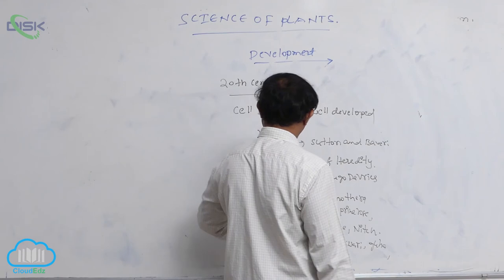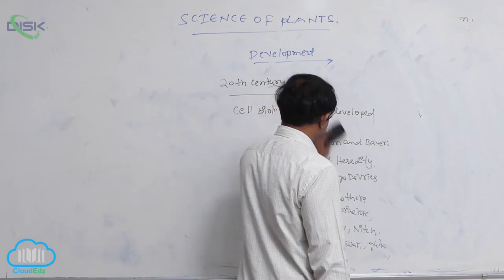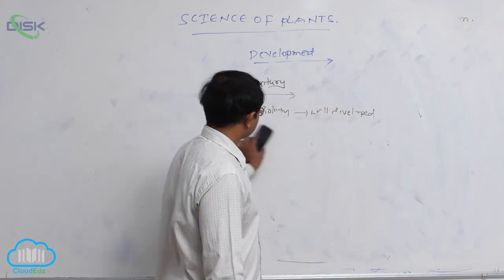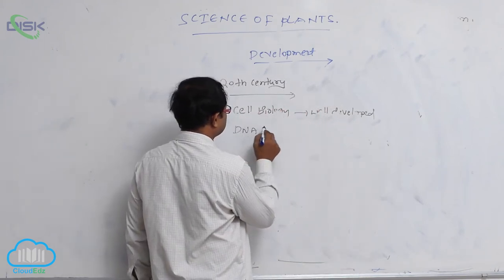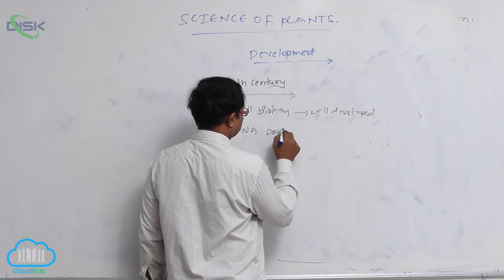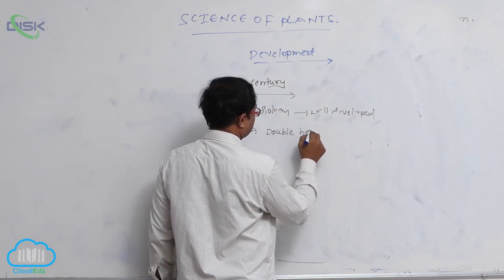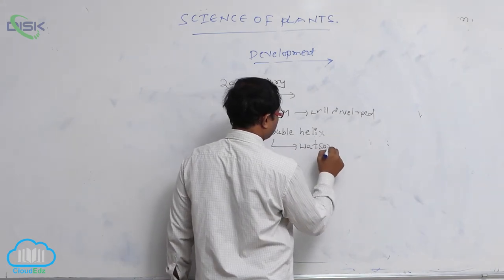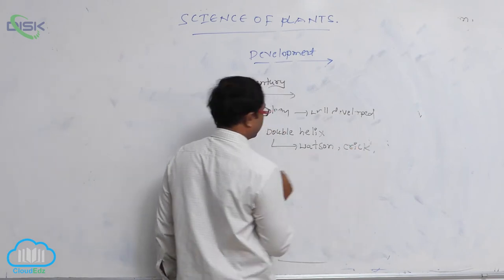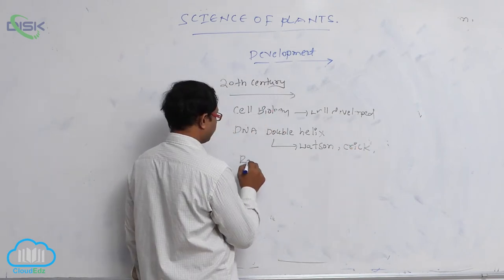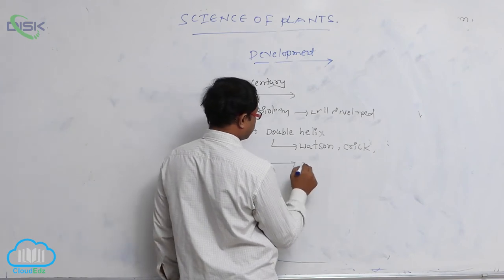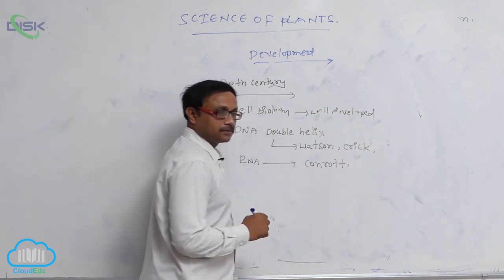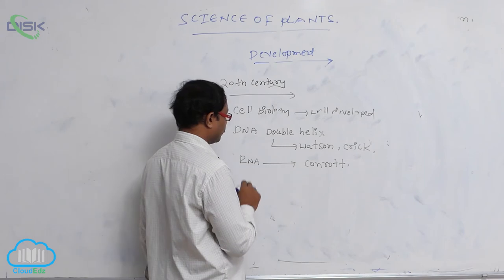DNA double helix model was introduced by Watson and Crick. RNA structure was explained by Konrad scientist. That is known as the development of cell biology.